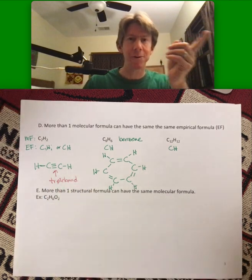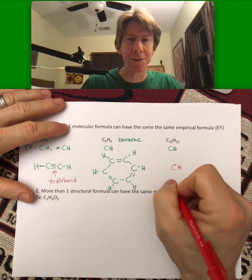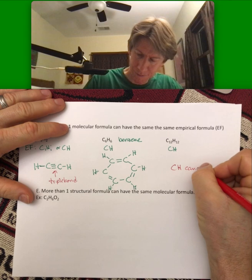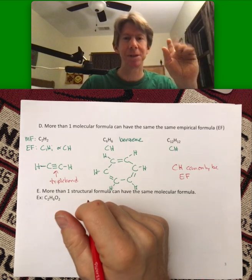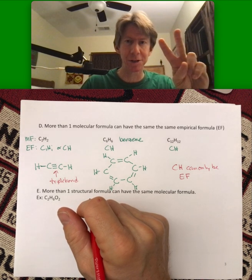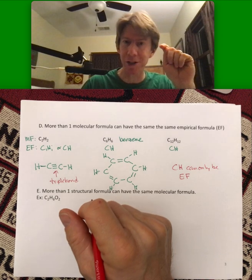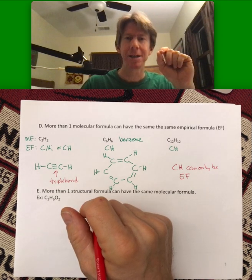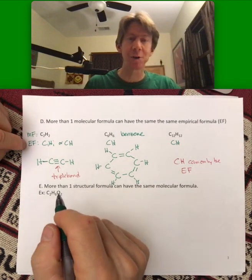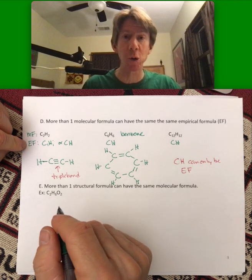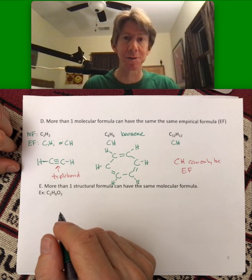For the homework, CH can only be an empirical formula. All the other ones can be empirical formula or a molecular formula, but CH is the only one that can only be empirical. There is no molecule with the formula CH. You'll see what I'm talking about when you get to the homework. Empirical formula gives you the least information, is the most general, so it's the least useful oftentimes, but sometimes we figure out the empirical formula as part of solving a problem.